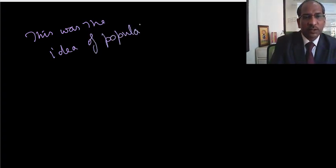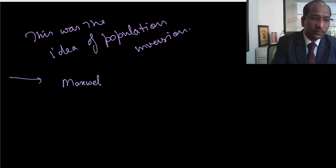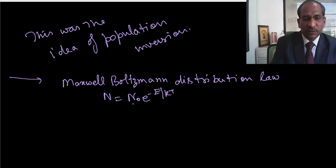So population inversion, how one can achieve that? There were two or three concepts. One, you have used Maxwell Boltzmann distribution law. That was N equals N0 e raised to power minus E upon kT. We have used this equation.